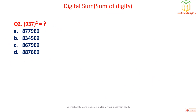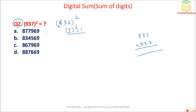Question 2: Calculate 937 squared. Instead of multiplying, use digital sum. For 937: 9 equals 0, and 7 plus 3 equals 10, digital sum is 1. So 1 squared equals 1. Now check which option gives digital sum 1. Cancel 9s, then 8 plus 7 is 15, plus 7 is 22, plus 6 is 28 — digital sum is 1. So option A is the correct answer, found within seconds.